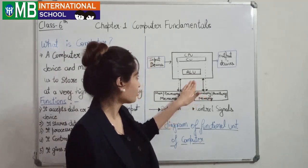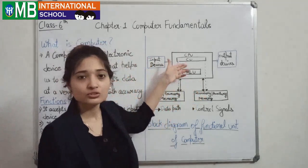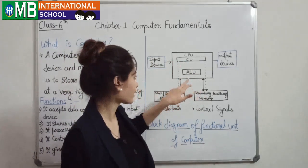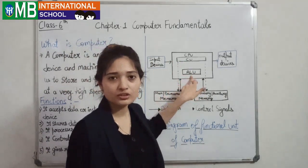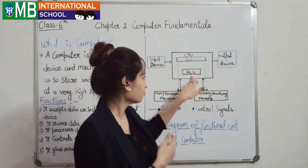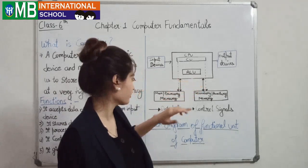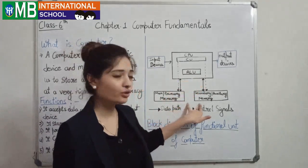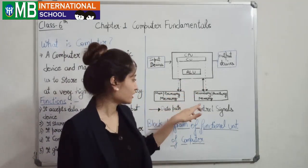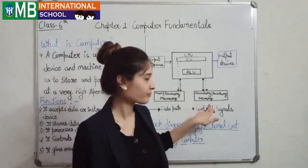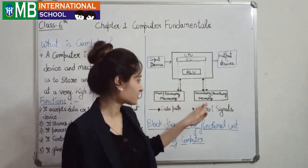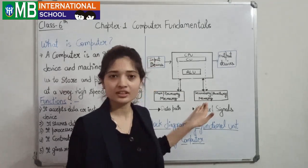The CPU is the part that controls the computer. ALU is the arithmetic logic unit which also controls the computer. The CPU has two basic memory types: primary memory and secondary memory. We will discuss the use of primary memory and secondary memory later.